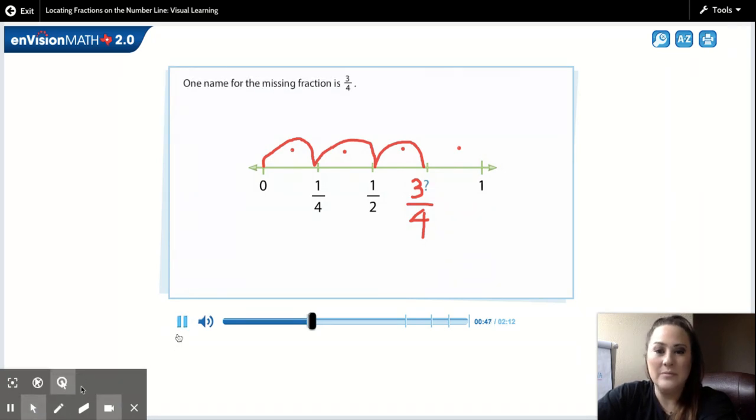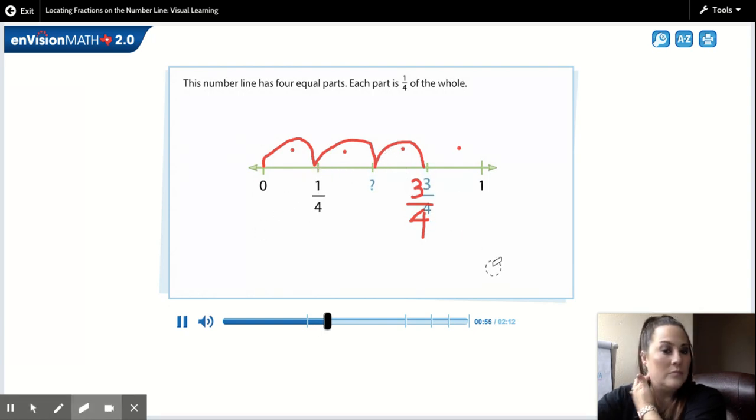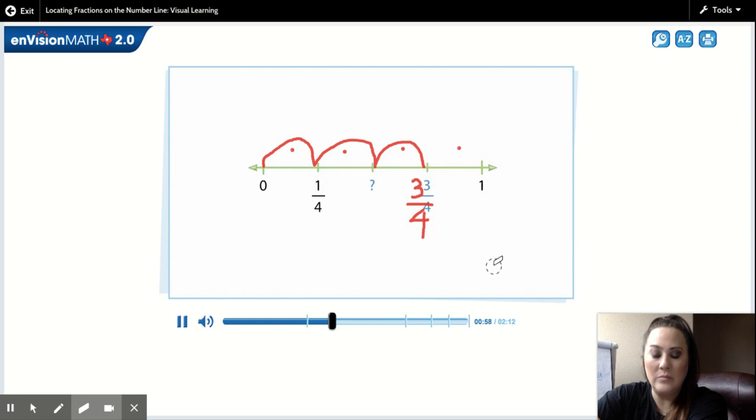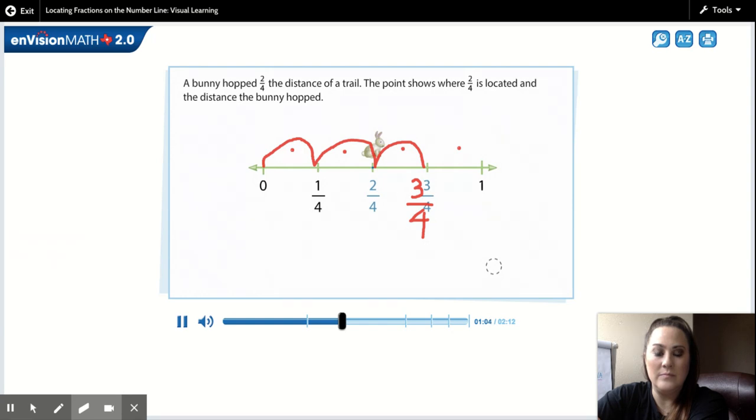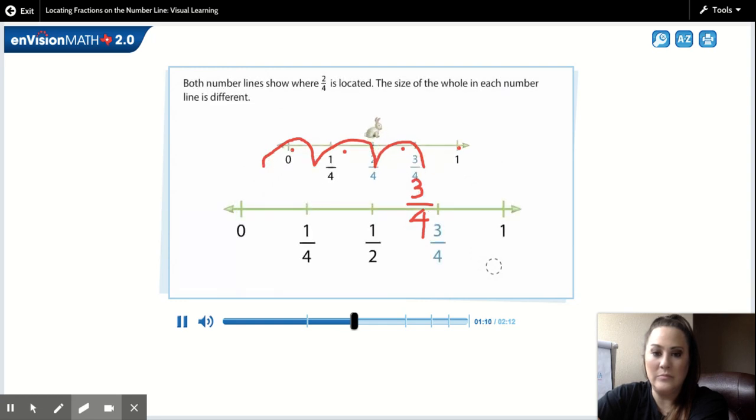One name for the missing fraction is three-fourths. This number line has four equal parts. Each part is one-fourth of the whole. A bunny hopped two-fourths the distance of a trail. The point shows where two-fourths is located and the distance the bunny hopped. Both number lines show where two-fourths is located. The size of the whole in each number line is different.